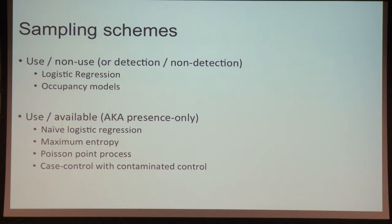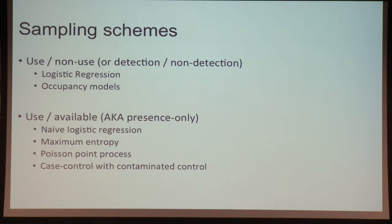I'm going to contrast two broad sampling schemes. One is a use or non-use type sampling scheme, where we have a predefined set of sample units, go to those units and survey for presence or absence — much like an occupancy modeling study. We'd go there once, and the animal was there or it was not. We're largely going to disregard this use/non-use approach for today's seminar, since there are whole workshops just on occupancy models.